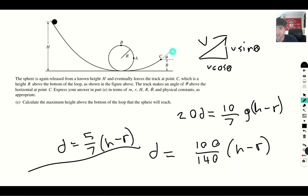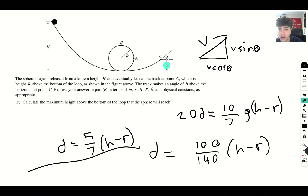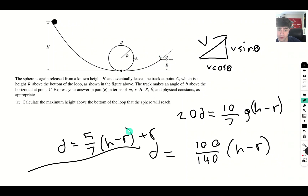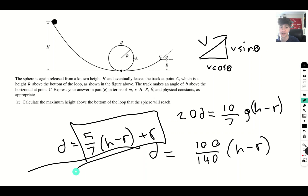However, the question asks for the maximum height above the bottom of the loop. Since point C is already at height r, we add r to our result. The final answer is: maximum height equals five-sevenths times (h minus r) plus r.